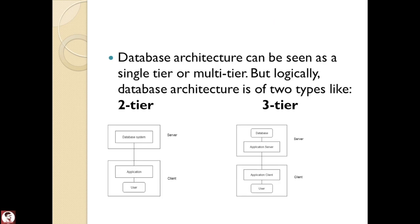The next one is database architecture. Normally it is single-tier or multiple-tier. We have two types we can use. Single-tier is mostly used, but two-tier or three-tier is also used. In two-tier, you can see server and client. The database is used on the server.